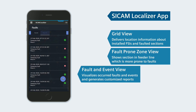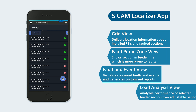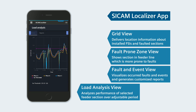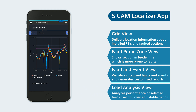The fault and event view visualizes faults and events that occurred and generates customized reports. The load analysis view analyzes the performance of a selected feeder section over an adjustable period.